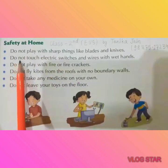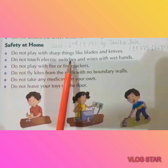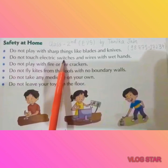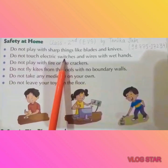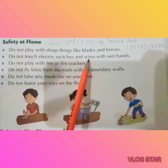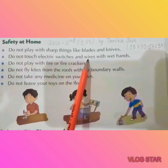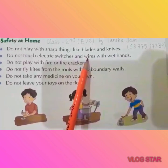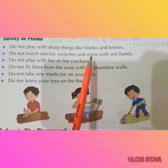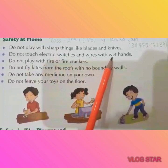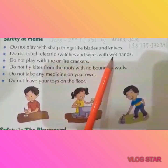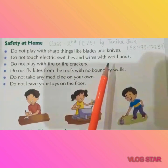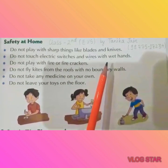The next point is: do not touch electric switches. Electric switches are what we use at home — to turn on the light, the fan, the iron, or any other appliance. We should never touch switches or wires with wet hands, because what happens is you get a shock or electric current. So you have to be careful.